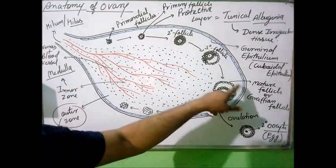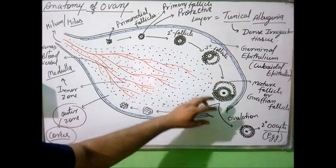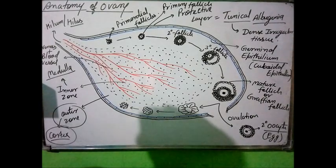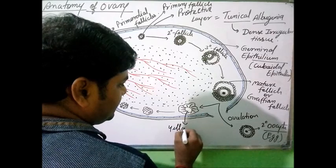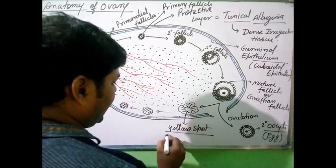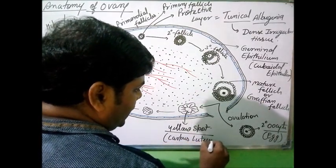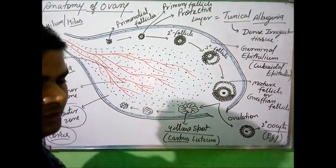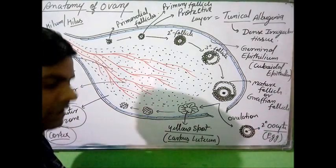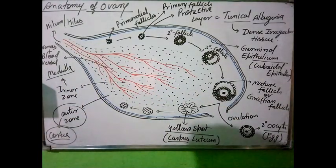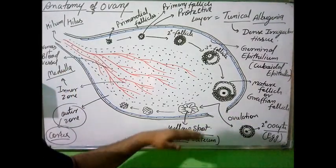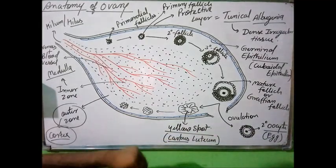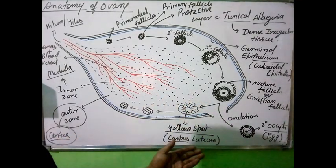The remaining cells of the Graafian follicle left behind after ovulation mix together, forming a yellow-colored structure called the corpus luteum — 'luteum' meaning yellow and 'corpus' meaning body. The corpus luteum is an endocrine structure that releases hormones; the main hormone is progesterone, and it also releases small amounts of estrogen and relaxin. Its lifetime after formation is approximately seven to ten days.